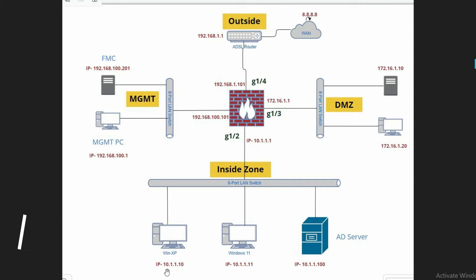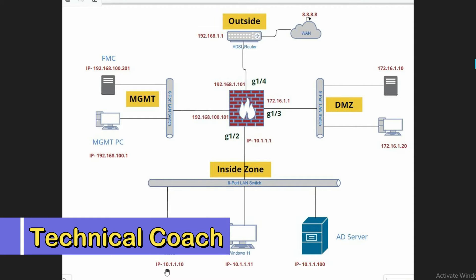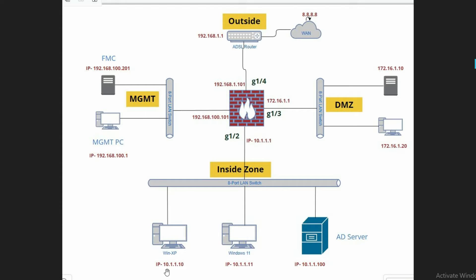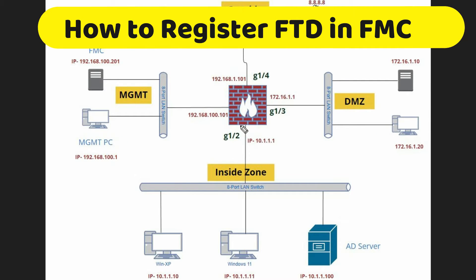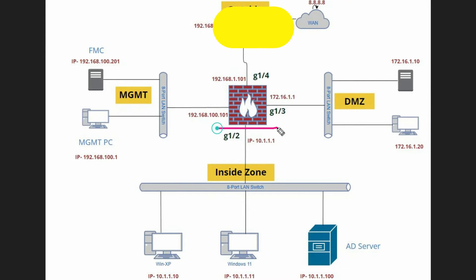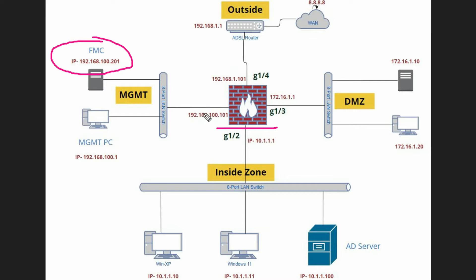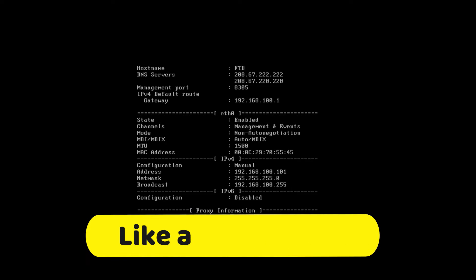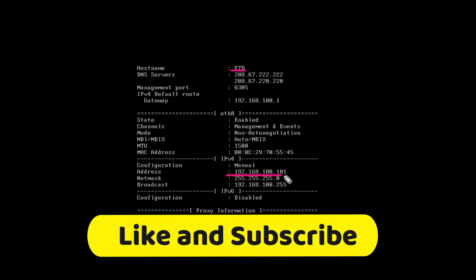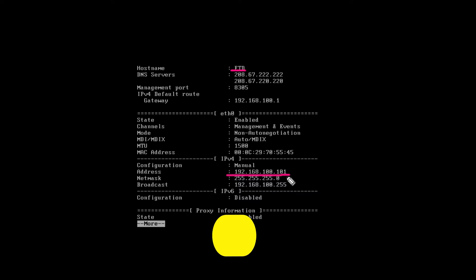Hello friends, welcome to my YouTube channel Technical Coach. In this video I'm going to show you how to register FTD in FMC. This is my FTD and this is my FMC. My FTD IP address is 192.168.100.101 and FMC IP is 192.168.100.201 — it's a management interface.